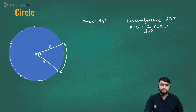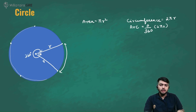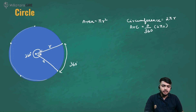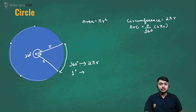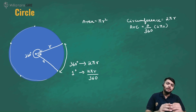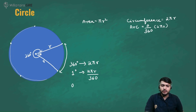Here's how we derive the arc length formula. For the whole circle, the angle at the center is 360 degrees and the length of the boundary is 2πr. If the angle is 1 degree, the boundary is 2πr/360 — we've simply divided both sides by 360, using the unitary method. If we then multiply both sides by θ, we get (2πr/360) × θ.